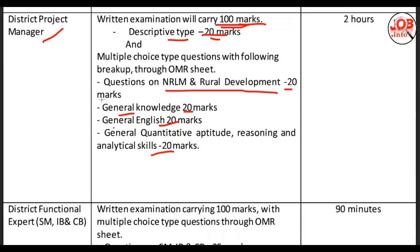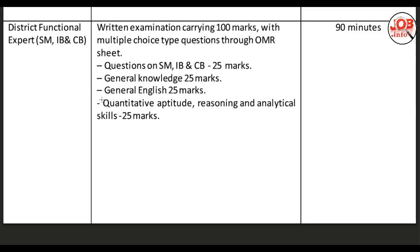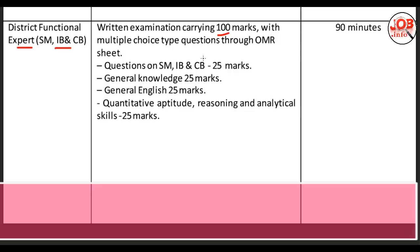Next, guys, District Functional Expert — SM, IB and CB. The exam is 100 marks. It is MCQ only, no descriptive questions. SM, IB and CB subject is 25 marks. General Knowledge is 25 marks. General English is 25 marks. Quantitative Aptitude, Reasoning and Analytical Skill is 25 marks.